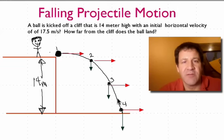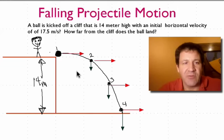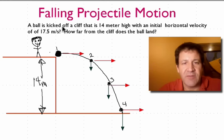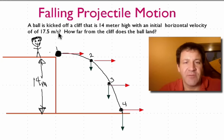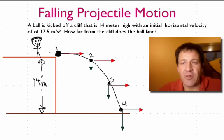This problem is entitled Falling Projectile Motion. The question is: if a ball is kicked off a cliff that's 14 meters high and has an initial horizontal velocity of 17.5 meters per second, how far from the cliff does the ball land?